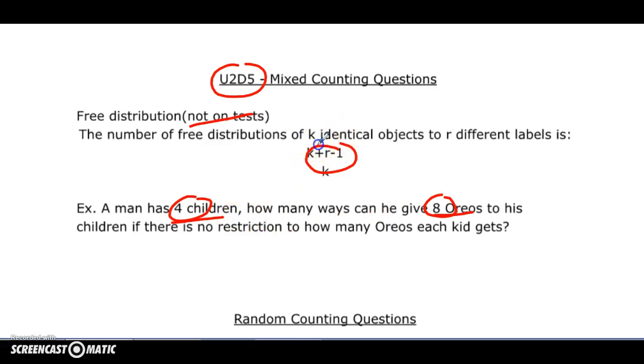So the way this works is a little bit different here. The objects here, this is your k and this is your r. So the Oreos are your k, and r are the distinct things that are getting the Oreos. And what you do here is you go 8 plus 4 minus 1 choose k, which is 8. So that's 11 choose 8. That's how that works, not on your test, just something that I thought you might be interested in.